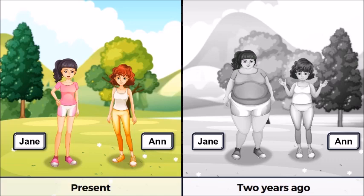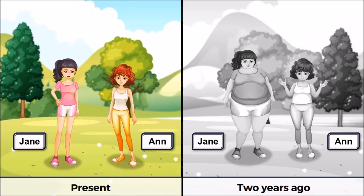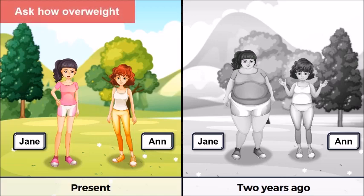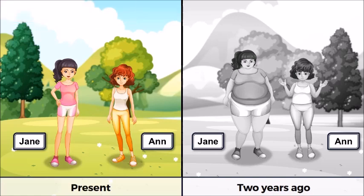Two years ago, Jane and Anne weren't slim. Two years ago, were Jane and Anne slim? No, they weren't slim — they were actually overweight. How overweight were they? Well, Jane was very overweight and Anne was a little overweight.